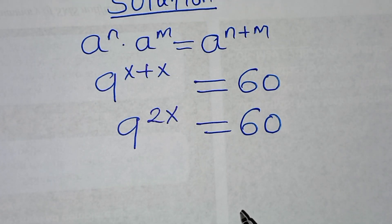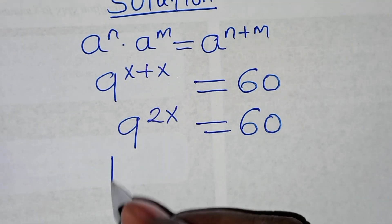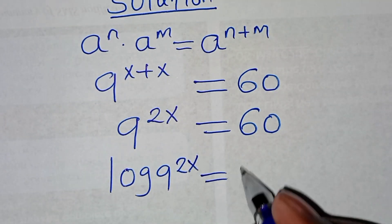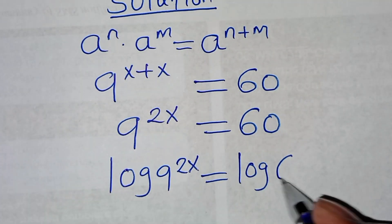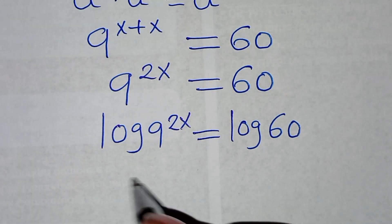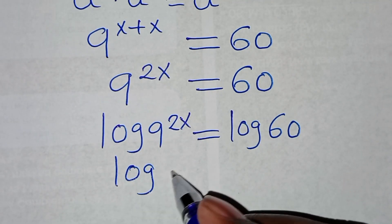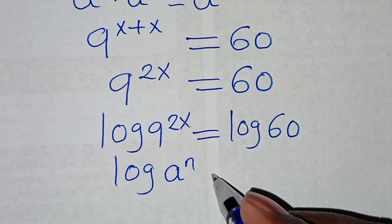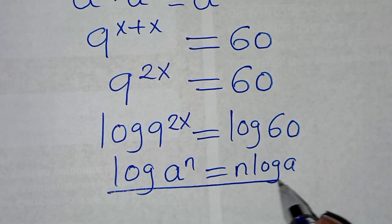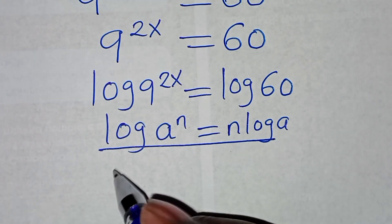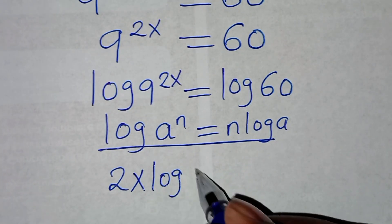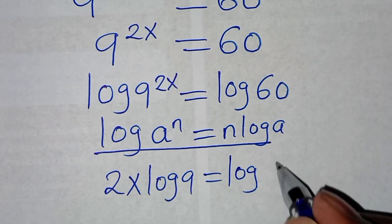To solve for x, we introduce logarithm on both sides. That is log of 9 to the power 2x, this is equal to log of 60. Now, log of 9 to the power 2x is in the form of log a to the power n, which we can express as n times log a. Applying this power-log property, then log of 9 to the power 2x can be expressed as 2x times log 9, and this is equal to log 60.